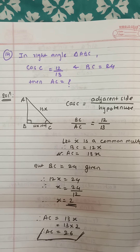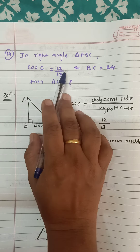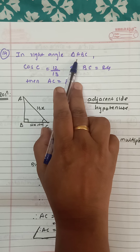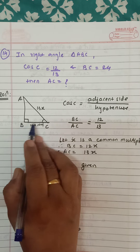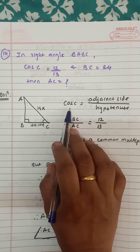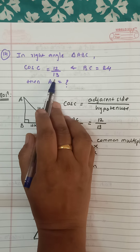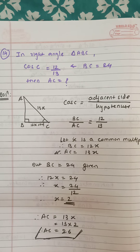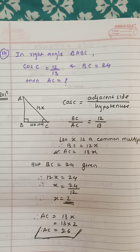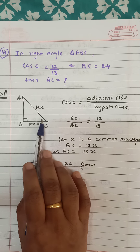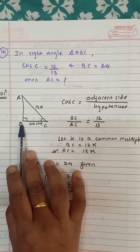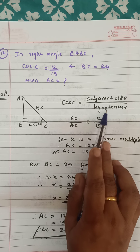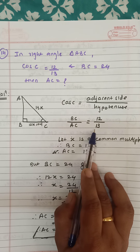Question number 14: in a right angle triangle, cosec is given as 12 upon 13, BC is given as 24, and AC we have to find. I have drawn a right angle triangle. Now cosec is the ratio of adjacent side upon hypotenuse. For angle C, adjacent side is BC and hypotenuse is AC, so BC upon AC equals 12 upon 13.